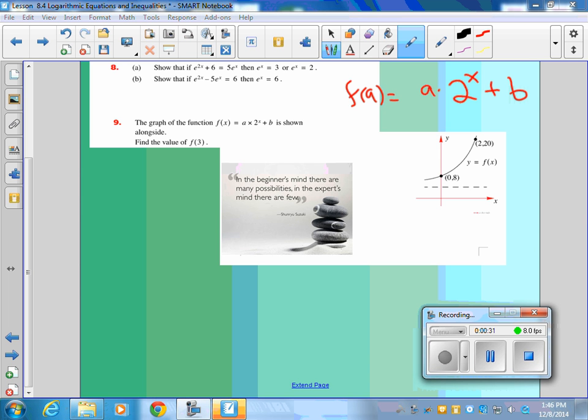So before we look at f of 3, I'm going to give you two points here. This point, 0, 8, which is a good place to start. f of 0 equals a times 2 to the 0 plus b. And what is the y value? The x value is 0. What's the y value for this point? 8, and that's f of 0, right?